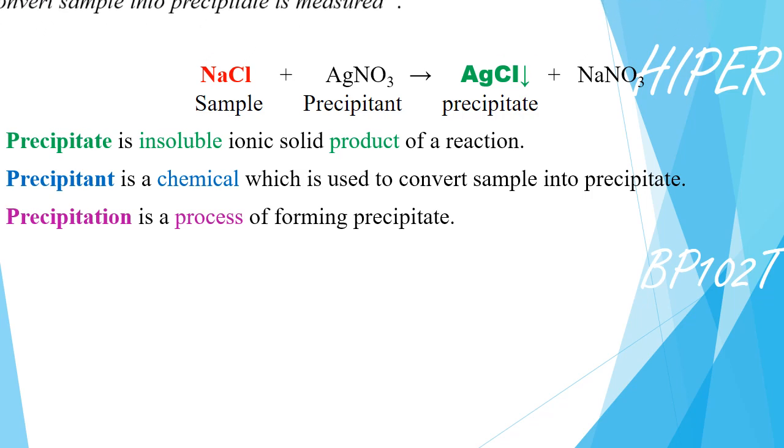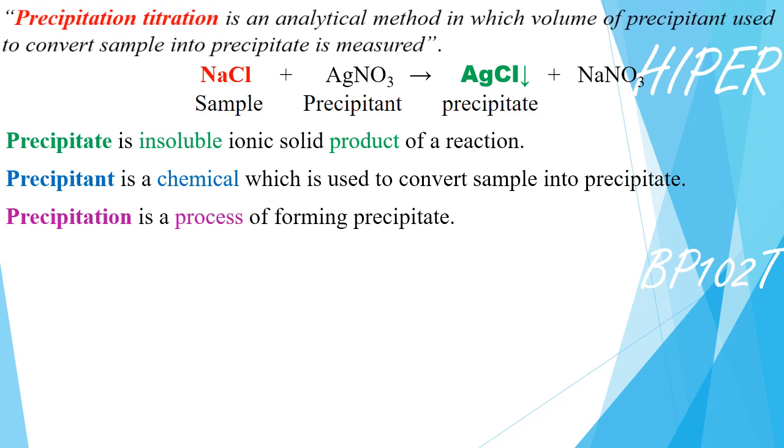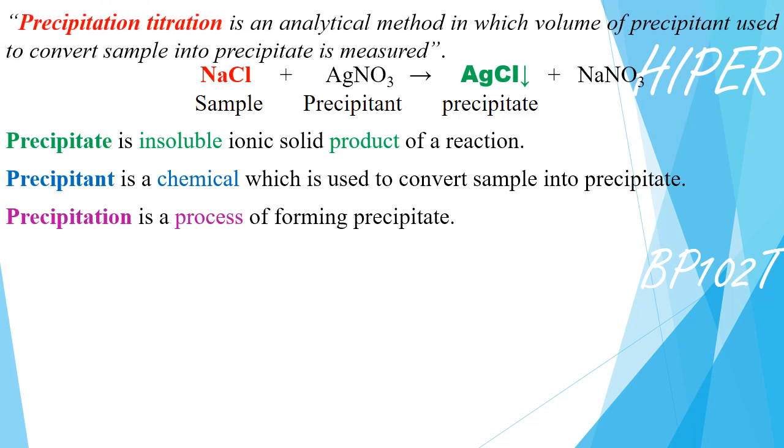So what is precipitation titration? Precipitation titration is a method in which volume of the precipitant used to convert the sample into precipitate is measured. Here, amount of silver nitrate will be measured, which is required to convert the sodium chloride into silver chloride.